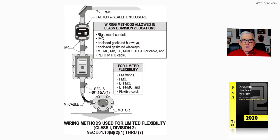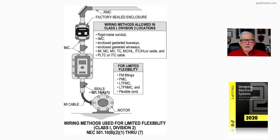Then down at the very bottom, we have a seal and we have MI cable, or we may have a flexible wiring method that is listed for limited flexibility. It's the boxed-in information right next to the motor. We could use FM fittings, FMC fittings, or liquid-type flexible metal conduit or tubing.